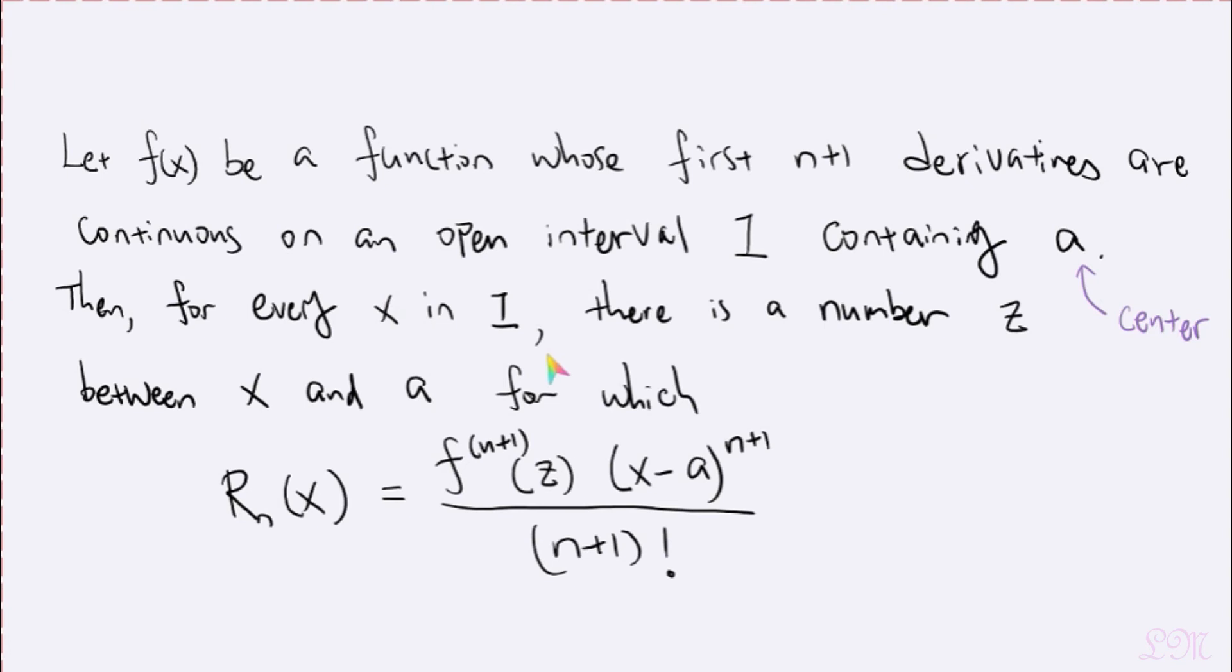So what exactly is this theorem saying? Well, it is saying, let's say, for example, if we're using a Taylor series centered at a equals 0 to approximate, say, cosine 0.5. So your x would be 0.5 in this case.